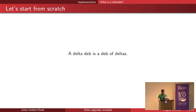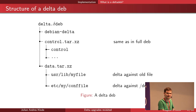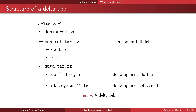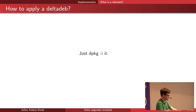So we can improve that. Let's start from scratch and say a delta deb is a deb of deltas. Essentially it's a normal deb file, with the difference that in the data table we replace the actual files with deltas against the old files. For config files we basically store a delta that contains the entire file, so applying the delta for a config file behaves just like extracting the entire file. We can add that into dpkg easily by changing a single bit in the part that writes new files to disk, so it just installs like a normal deb.